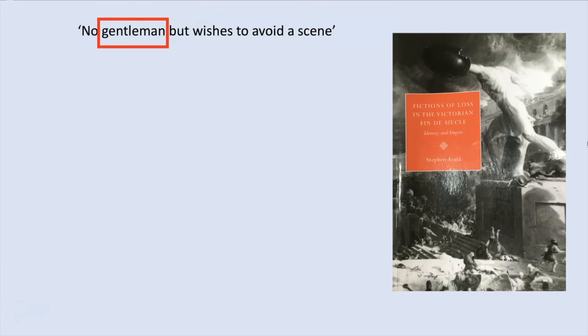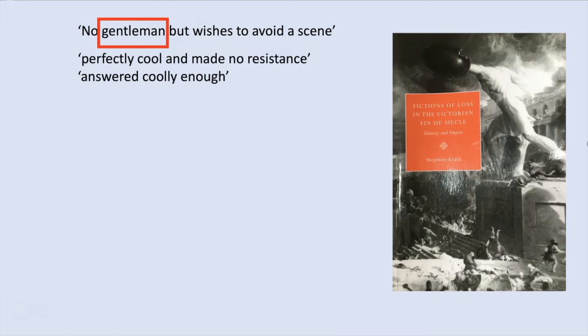Despite his undoubtedly violent crimes, Hyde is regularly presented as calm and often well-mannered. Enfield explains how Hyde was perfectly cool and made no resistance when he accosted him in Chapter 1. When Utterson greets Hyde in Chapter 2, Hyde answered coolly enough. Lanyon describes how Hyde knocked very gently on the door and spoke to him civilly enough. These actions seem more akin to those of the upper-class gentlemen Utterson, Jekyll, and Lanyon than to what we might imagine from a primitive, dangerous monster.